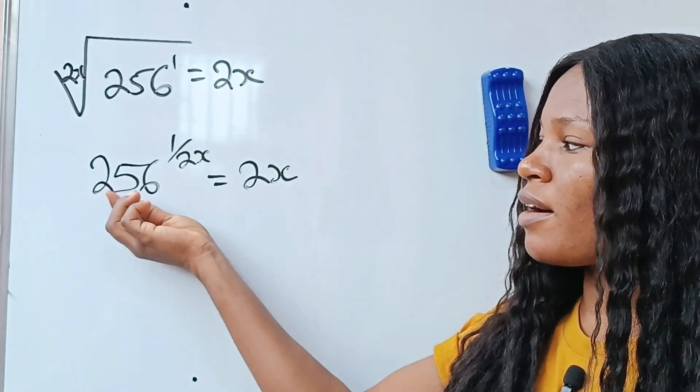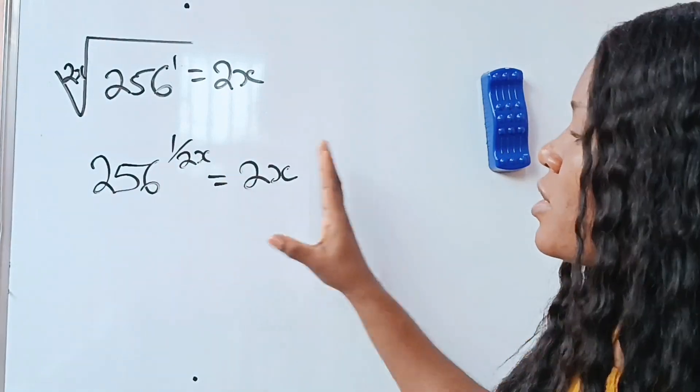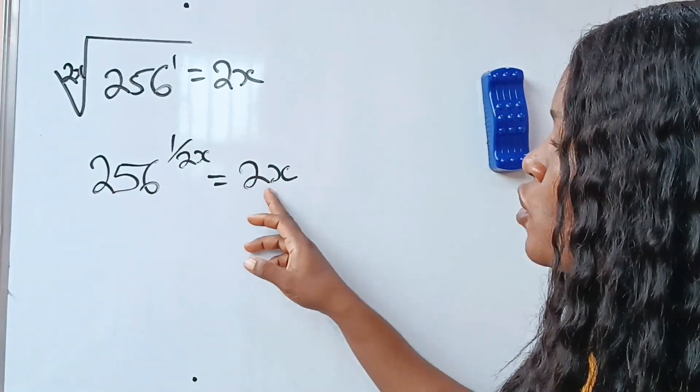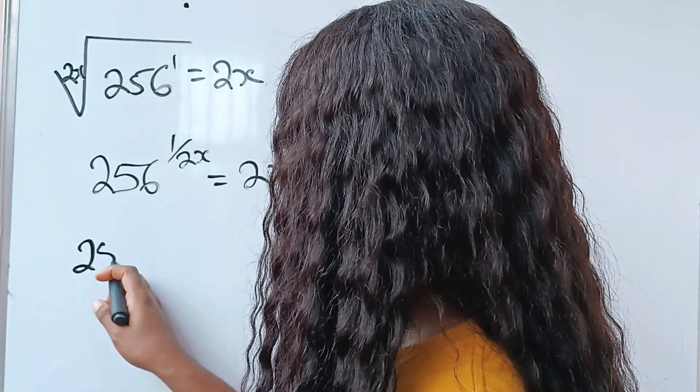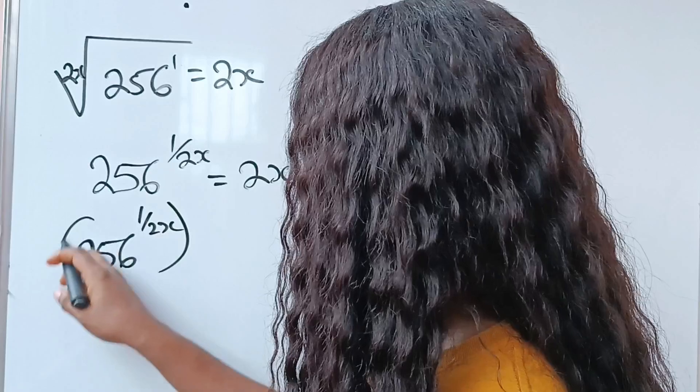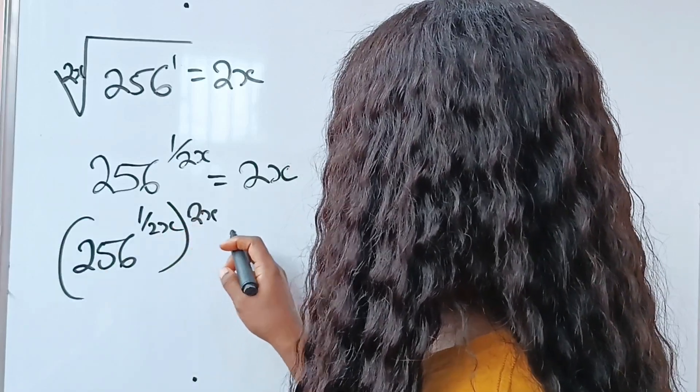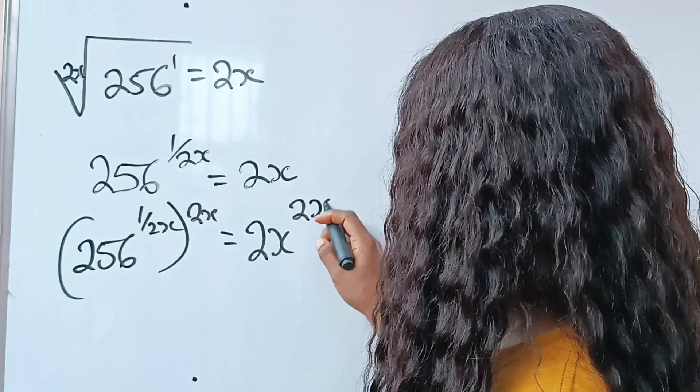Now, in order for me to have 256 on its own, I'm going to raise each of these to the power of 2x. So 256 raised to the power of 1 over 2x, raised to the power of 2x, is equal to 2x to the power of 2x.